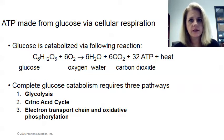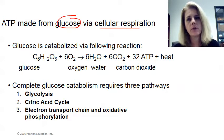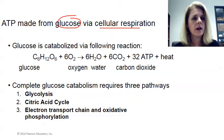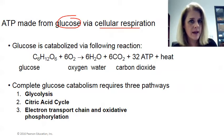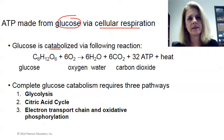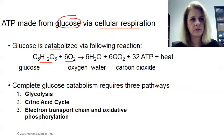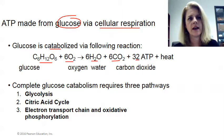What we want to talk about specifically is making ATP using the food that we eat. We're going to focus on glucose and how we make ATP from glucose through cellular respiration. When we catabolize glucose — breaking it down — in the presence of oxygen, you take glucose as a six-carbon compound and the byproducts are going to be water, carbon dioxide, ATP, and heat.